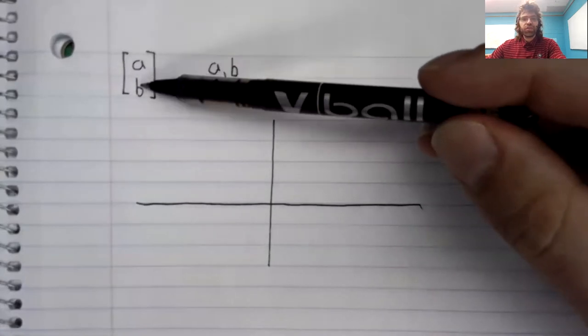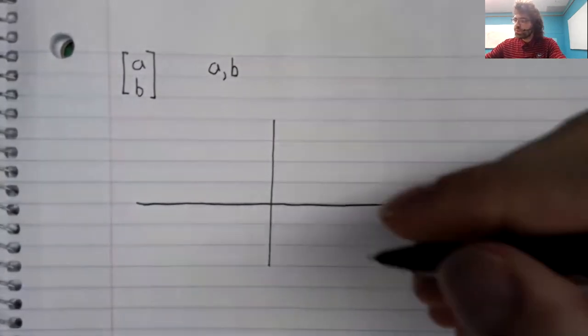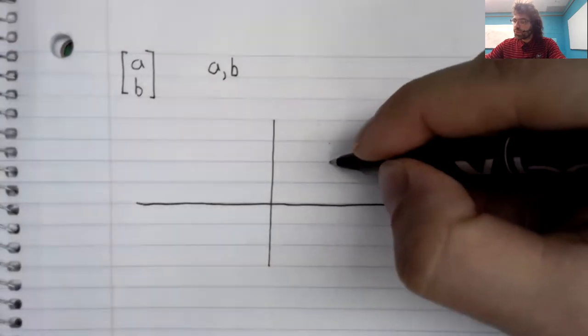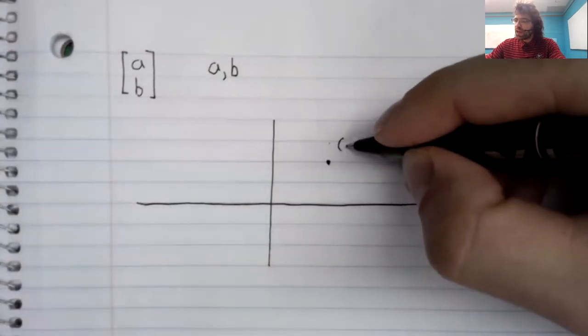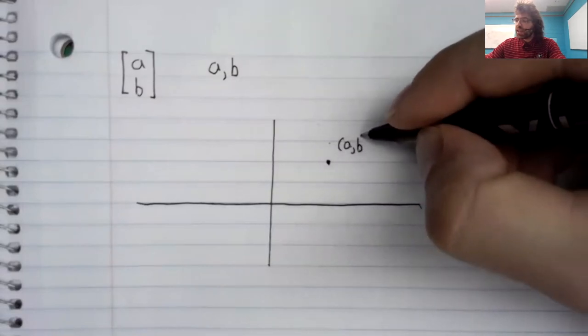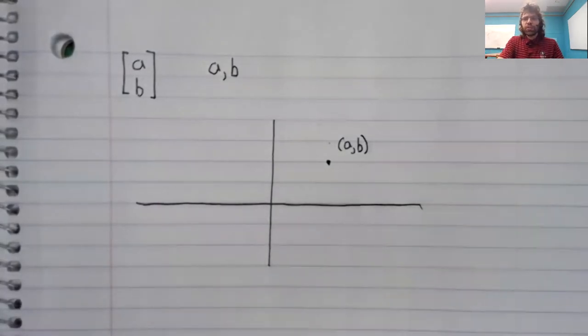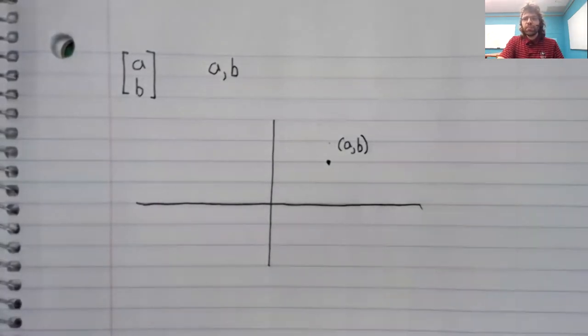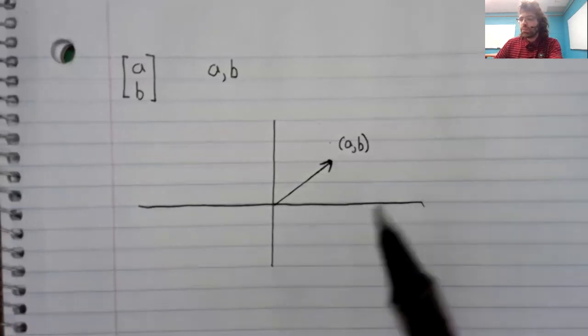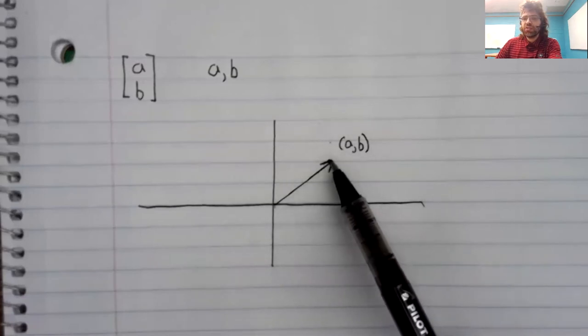So to visually represent this vector, we simply find the point A, B, and what we do then is draw an arrow connecting the origin to this point.